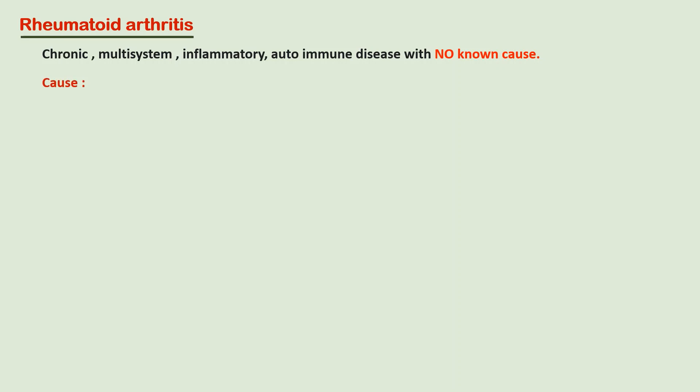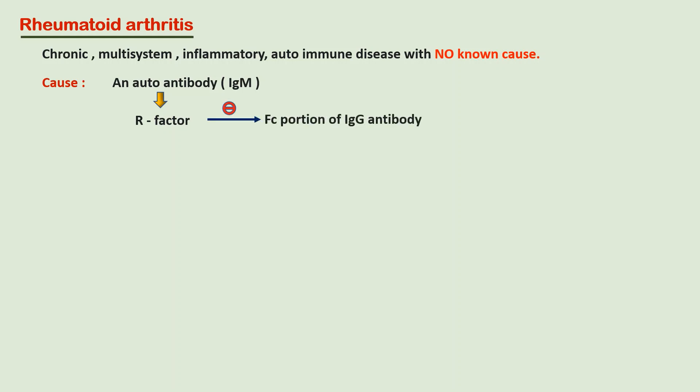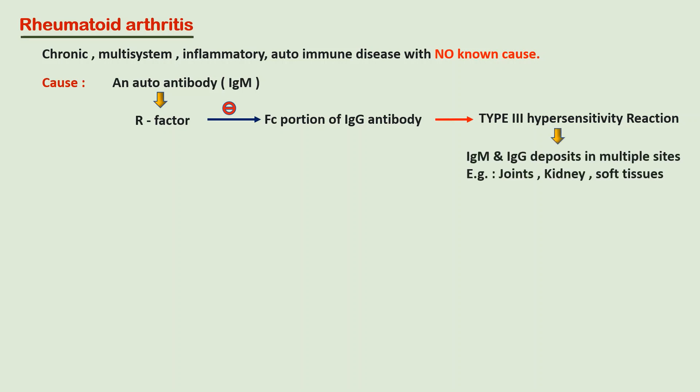This is an autoimmune disease. An autoantibody — the immunoglobulin M — is produced against the FC fragment, that is the FC portion of the immunoglobulin G antibody, which leads to a type 3 hypersensitivity reaction. This complex of IgM and IgG lodges in different places like the glomeruli, soft tissues, joints, etc., and leads to multi-system inflammatory manifestations.